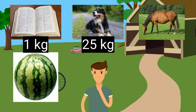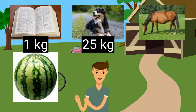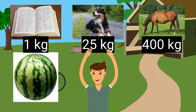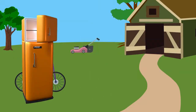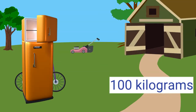How about a horse? A horse weighs a lot more than a dog. A good estimate for the mass of a horse is about 400 kilograms. Think about a refrigerator. Which of these measurements is closest to the mass of a refrigerator? 100 kilograms is the best estimate. A refrigerator weighs more than a dog, but less than a horse.